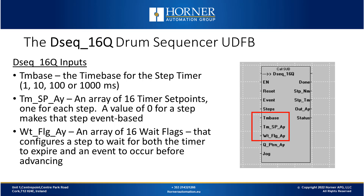Next is a timer setpoint array — an array of 16 timer setpoints, one per step. For every step that advances based on a timer setpoint, you set its setpoint to the corresponding element in that array. If a step is to advance strictly on an event and not on a timer, set that timer setpoint to zero. There is also a wait flag array — an array of 16 bits where every bit represents a wait flag for each step. If you don't want to advance past a step unless both the timer setpoint and the event input turn on, you set the wait flag for that particular step.